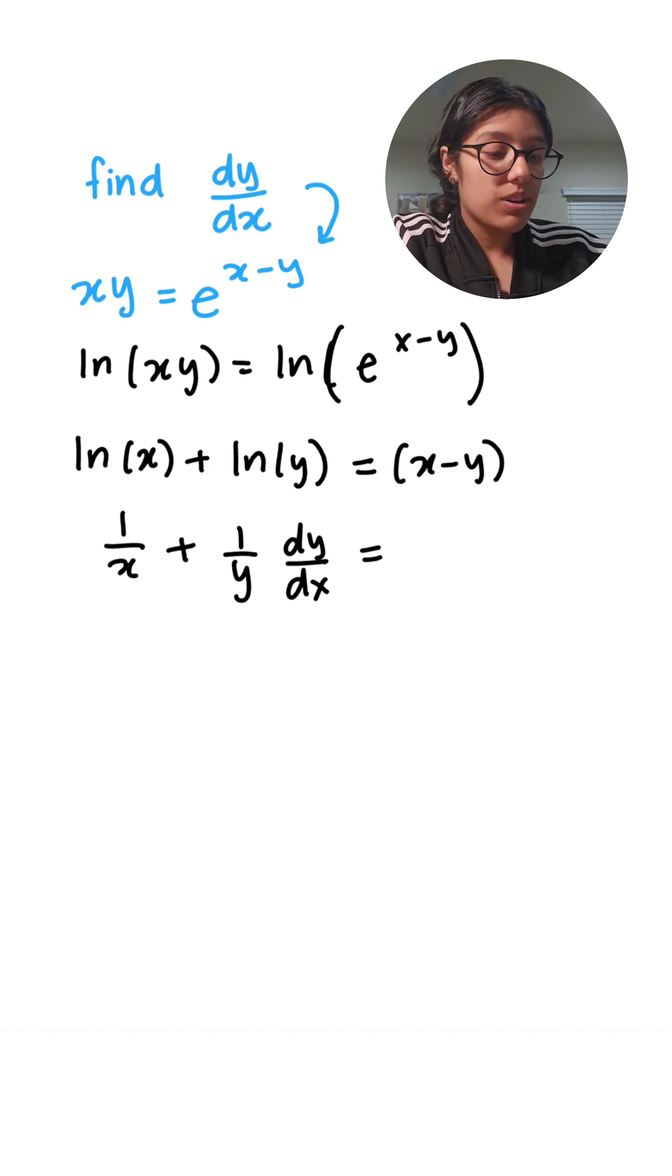Moving on to the right side, we know that derivative of x is just one and same thing over here, dy over dx. Once again, applying implicit differentiation.